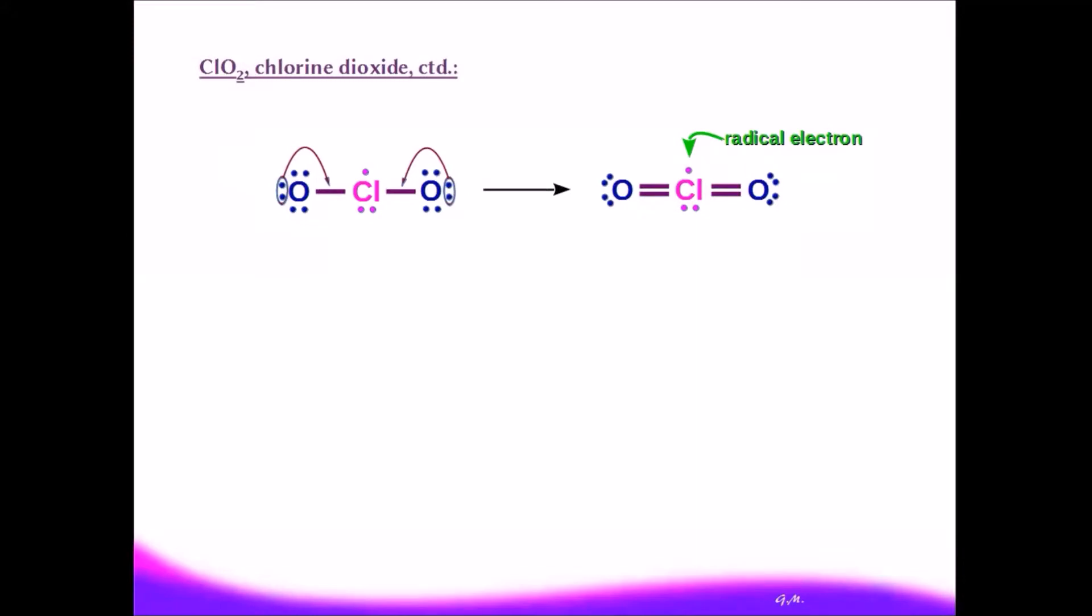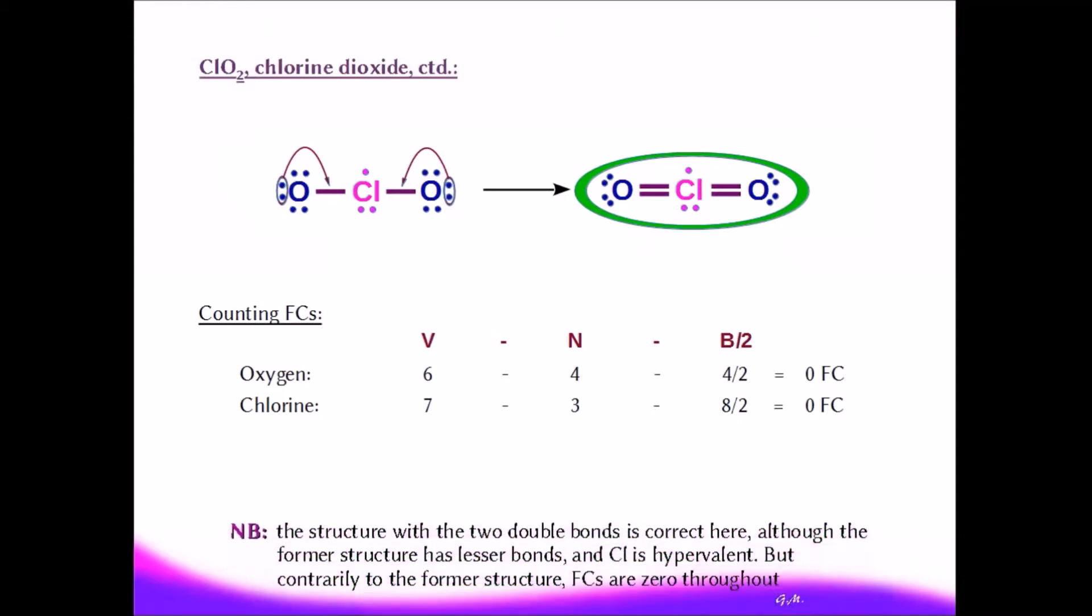Formal charge calculation gives for oxygen: six minus four minus four divided by two equals zero formal charge. For chlorine, we have seven minus two minus eight divided by two, also a zero formal charge. So this structure is the correct one, although chlorine is hypervalent and there are more bonds than in the former structure.